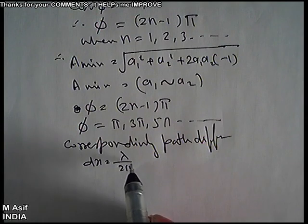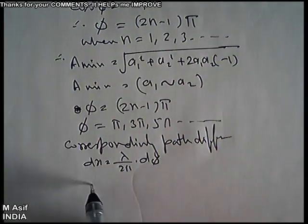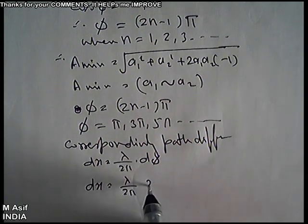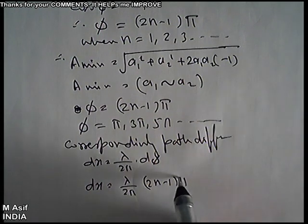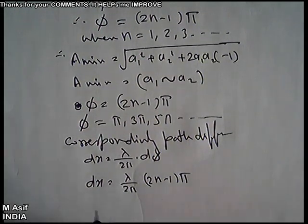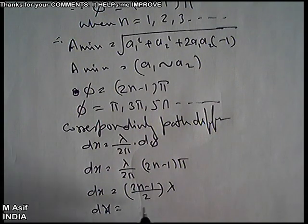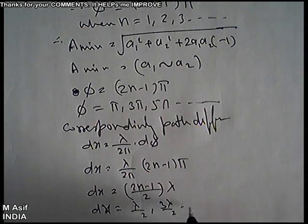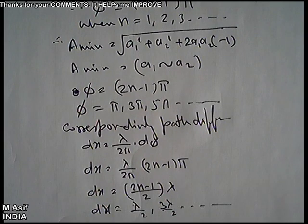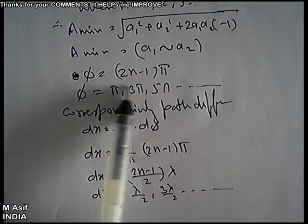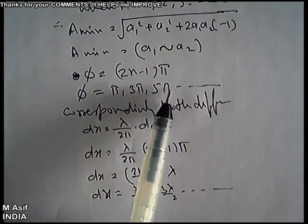Path difference for minima: Δx = (λ/2π)·Δφ = (λ/2π)·(2n−1)π = (2n−1)·λ/2. So path difference must be λ/2, 3λ/2, 5λ/2, and so on — odd multiples of λ/2. Phase difference must be π, 3π, and so on.